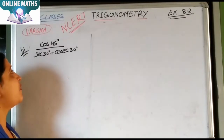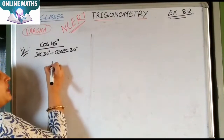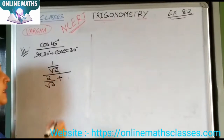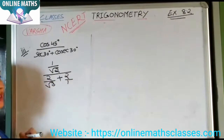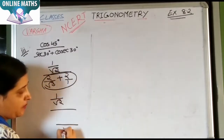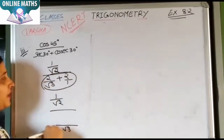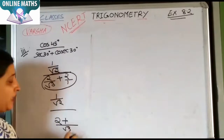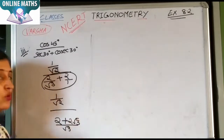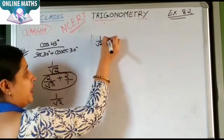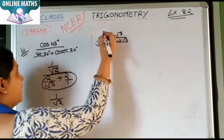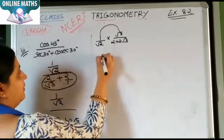Next, part three: cos45 upon sec30 plus cosec30. cos45 is 1 upon root 2, sec30 is 2 upon root 3, and cos30 is root 3 by 2. Now to solve this, the LCM involves root 2 and root 3. After finding LCM you get the term root 3 upon 2 plus 2 root something in the numerator.